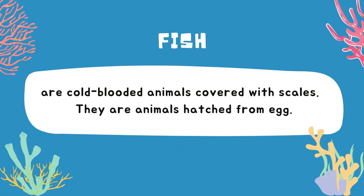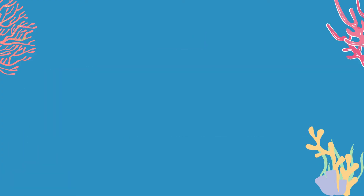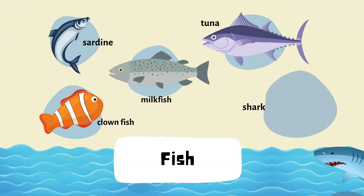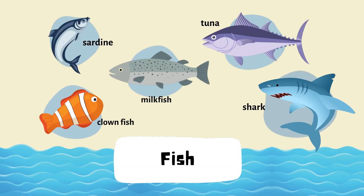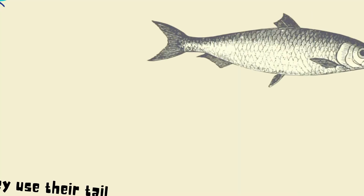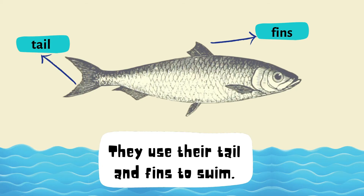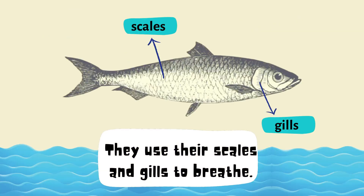Now, let us discuss about fish. Fish are cold-blooded animals covered with scales. They are animals hatched from egg. Here are some examples: sardine, milkfish, tuna, clownfish, and shark. They use their tail and fins to swim. They use their gills to breathe.